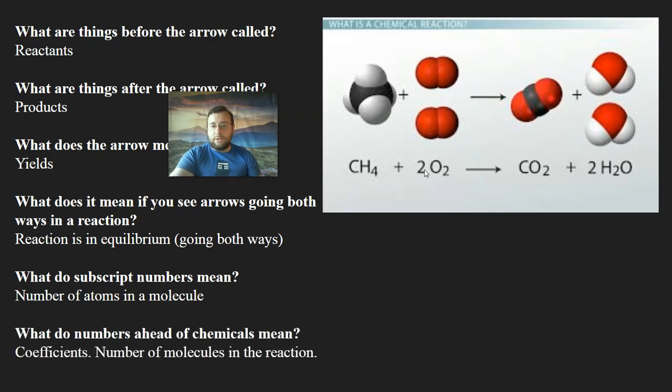The numbers before a molecule, like this two here, mean the number of molecules that you have of that type in the reaction. So this is saying that in order for methane to burn, you need at least two molecules of oxygen. And then you end up making one molecule of carbon dioxide with two oxygens each, and two molecules of water, which have two hydrogens each. So that's what the subscripts and coefficients mean.